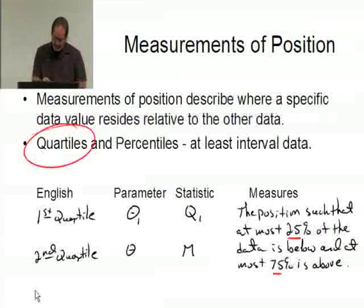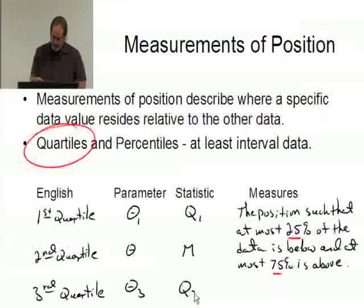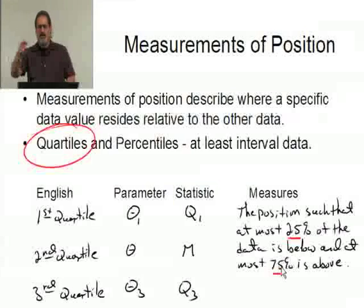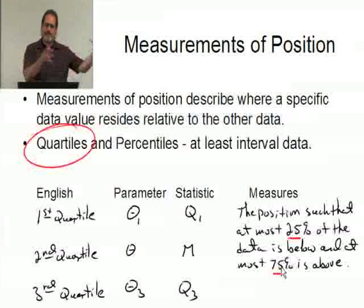And the last is the third quartile. And that's going to be theta-three and Q3. And again, the measurement is the same thing, only rather than twenty-five percent below and seventy-five percent above, they switch. It's the third quartile, so there's going to be no more than seventy-five percent below, no more than twenty-five percent.